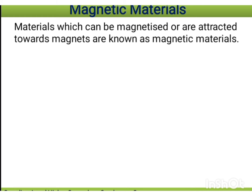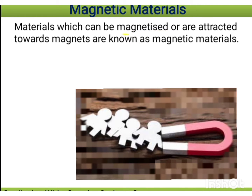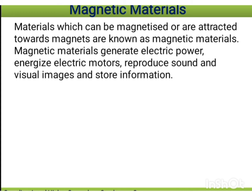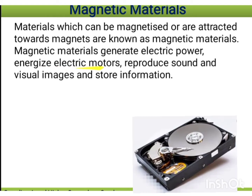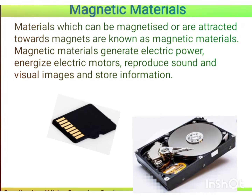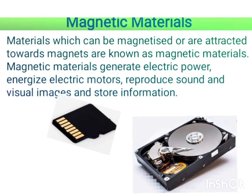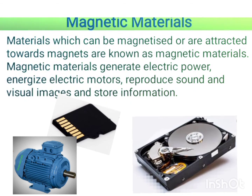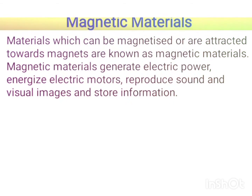Materials which can be magnetized or are attracted towards magnets are known as magnetic materials. Magnetic materials generate electric power, energize electric motors, reproduce sound and visual images, and store information. These are the uses of magnetic materials — even hard disks store information because of magnetic materials.